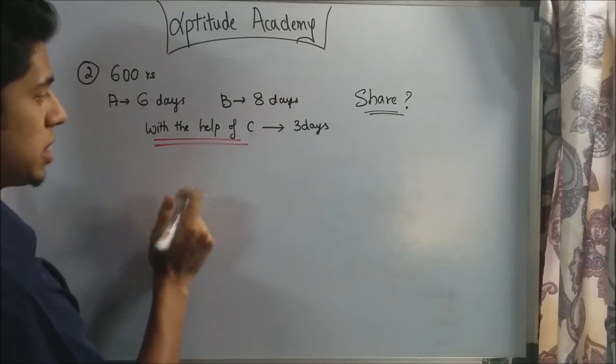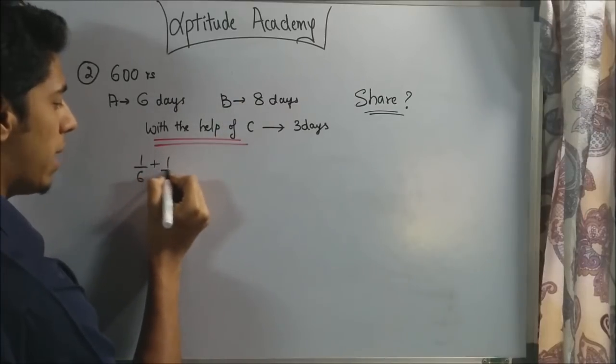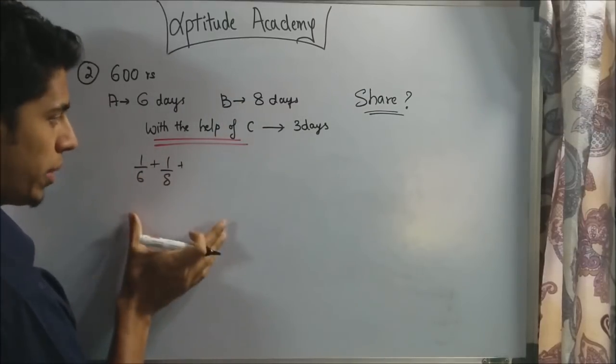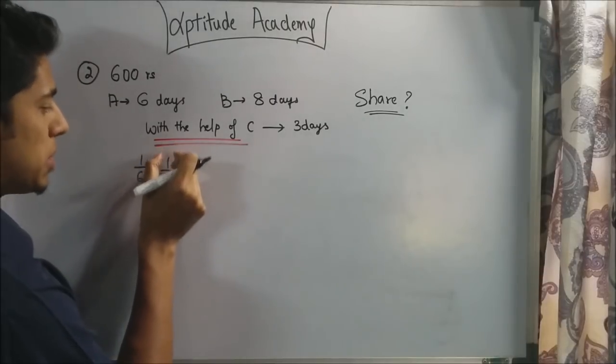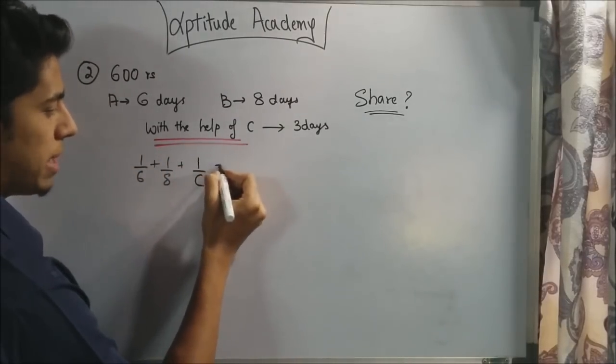Let's write the equation. A takes 6 days to finish a work, so every day he finishes 1 by 6. Similarly, B will finish 1 by 8. This is assuming they are all working together. So A pitches in 1/6 to the work, B pitches in 1/8 of the work, and C, we don't know. So let's just keep it as 1 by C.